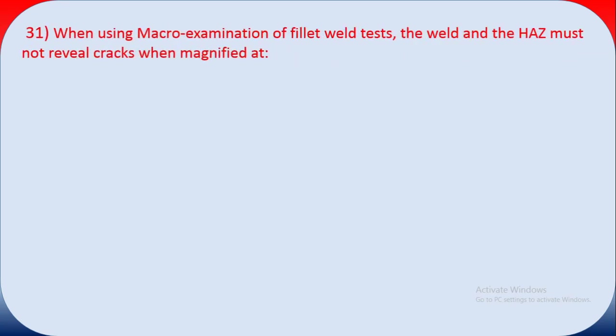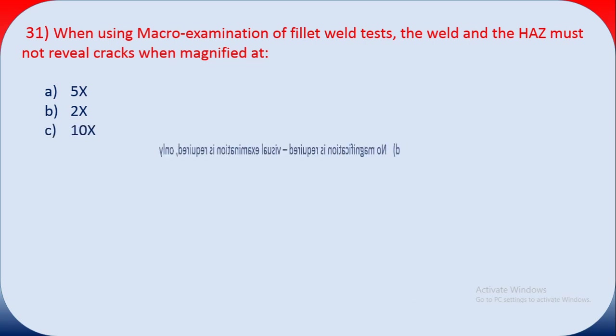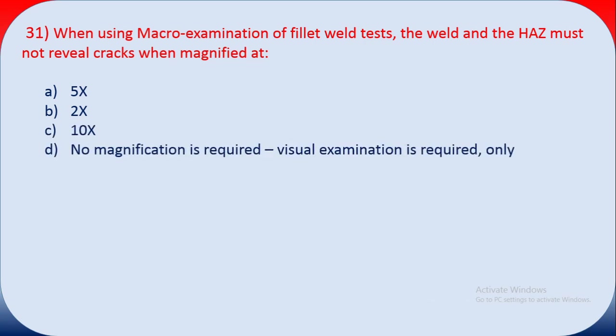Question thirty-one: when using macroexamination of a fillet weld test, the weld and heat-affected zone must not reveal cracks when magnified at what level? Options: 5X, 2X, 10X, or no magnification required — visual examination only. The answer is D — only visual examination is required in macroexamination of fillet welds.